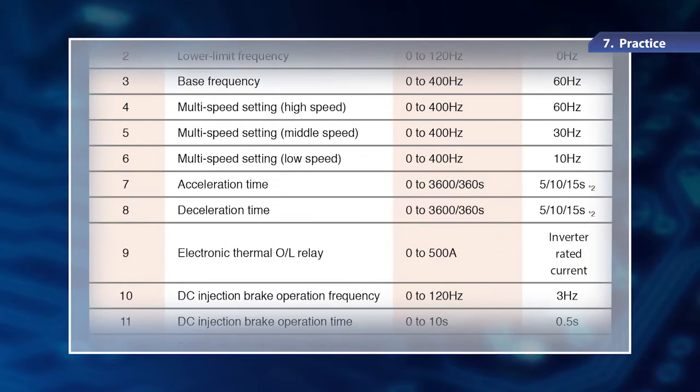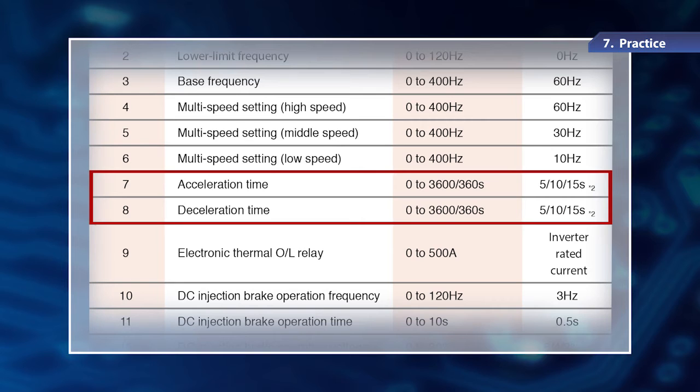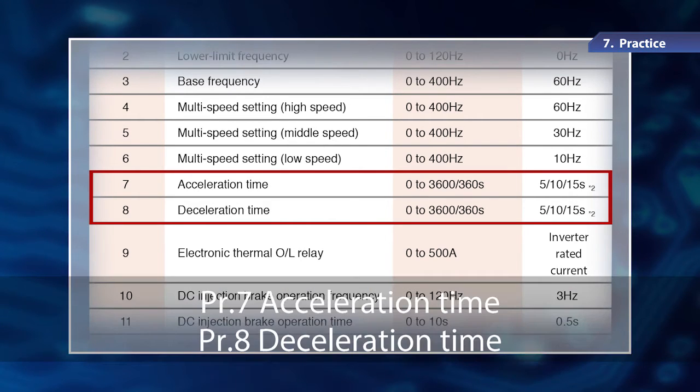As a useful inverter function, I'd like to show you the parameters to set the acceleration time and deceleration time to start or stop the motor. Parameter 7 is for acceleration time, and parameter 8 is for deceleration time.